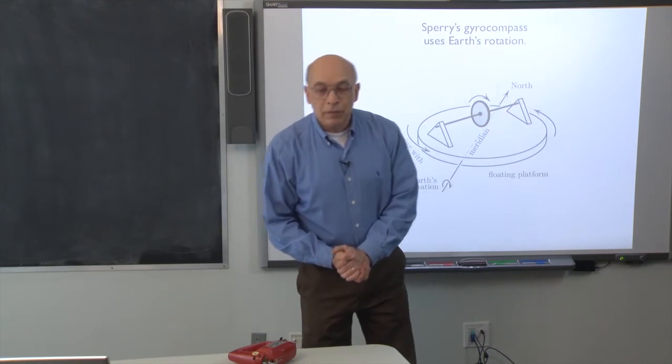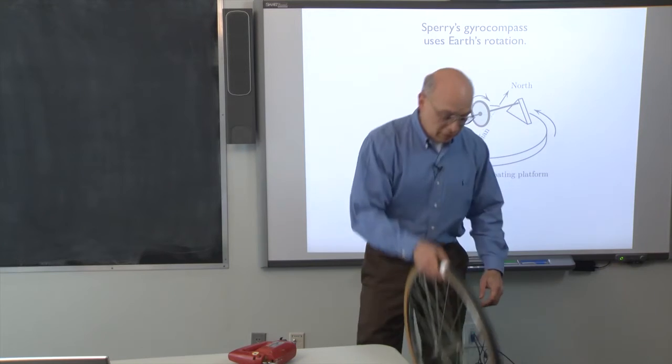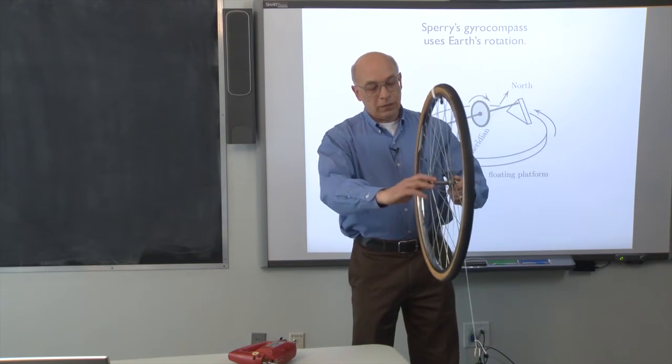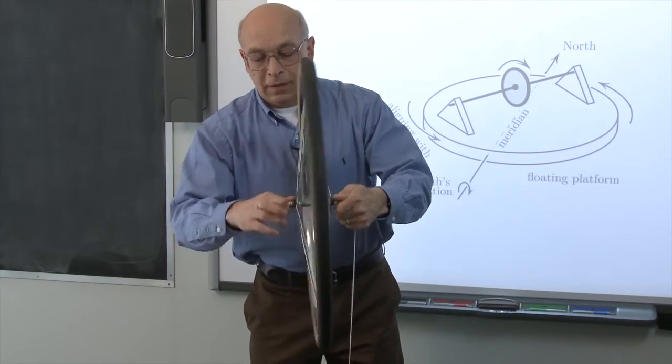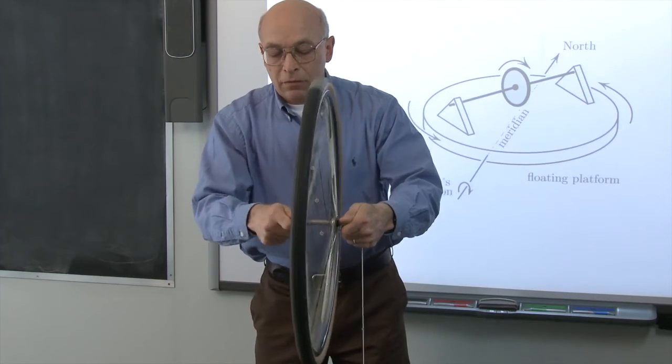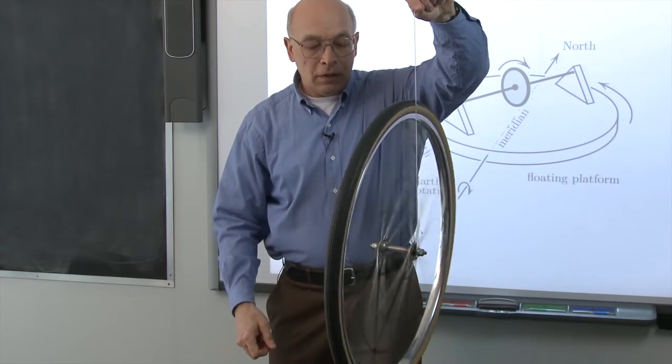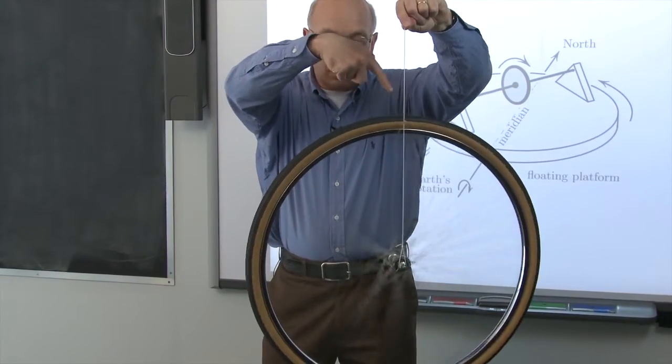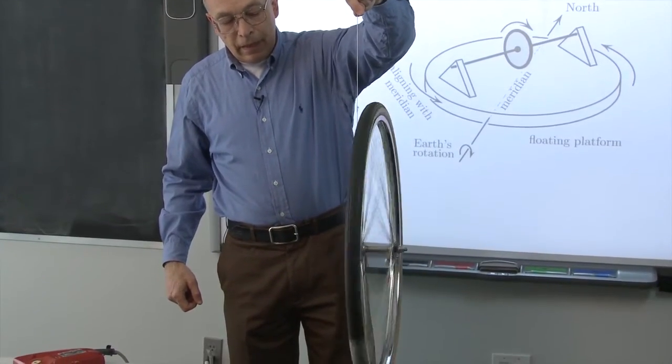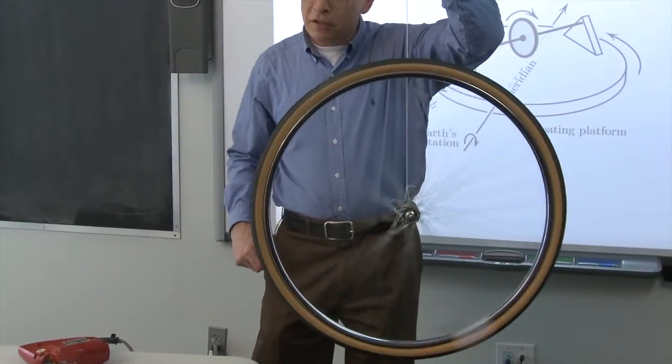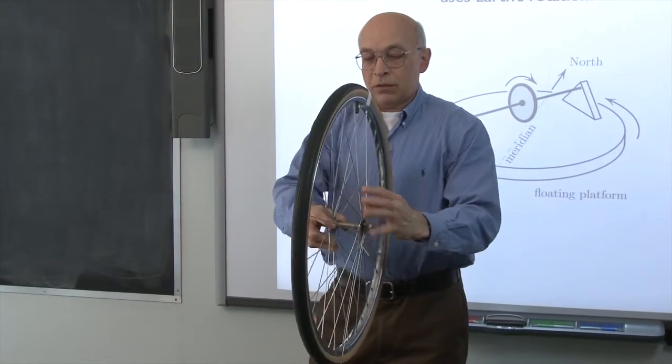So I would like to show another example of a centrifugal force having a counterintuitive manifestation. And that's a well-known example of the gyroscope, which in our case is just the bicycle wheel. So when I spin it up, it begins to behave in a very strange way. When I suspend it, it doesn't fall. But instead, it slowly precesses. And the question is, what keeps it up? And the answer is the centrifugal force. But it's not the centrifugal force that first comes to mind when one speaks of a spinning wheel. Rather, it's the following. So here's a slow motion.